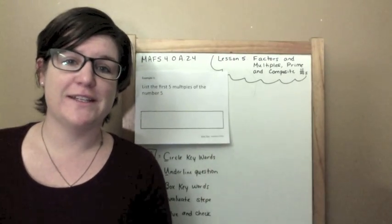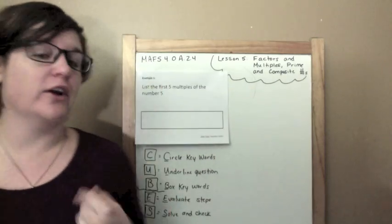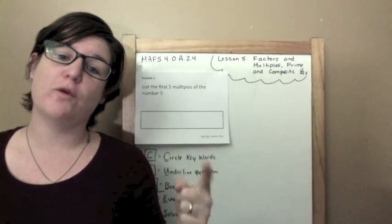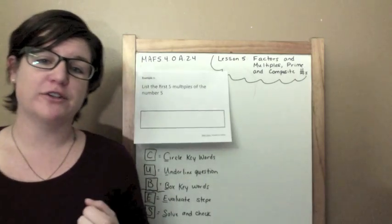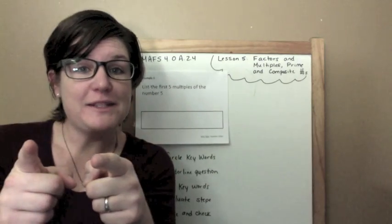Hey everybody! This is the 4th grade edition of How to Pass the Math FSA. We are working on the standard MAFS.4.OA.2.4, which is Lesson 5, Factors and Multiples, and Prime and Composite Numbers. So, let me teach ya.